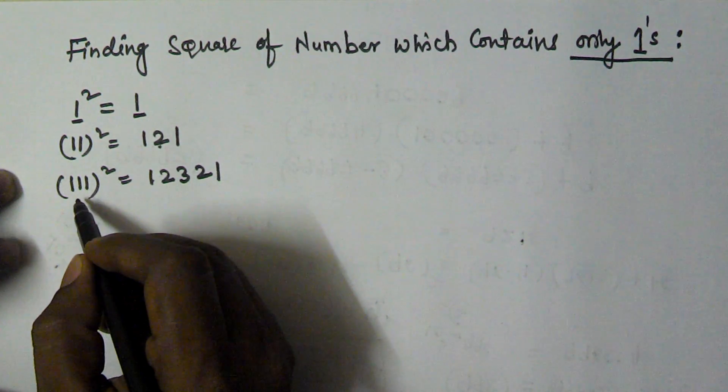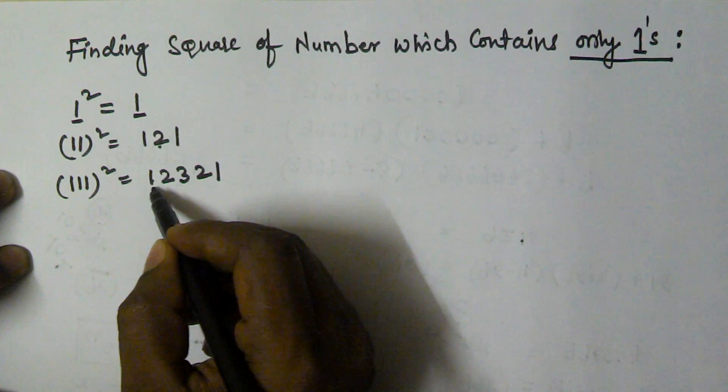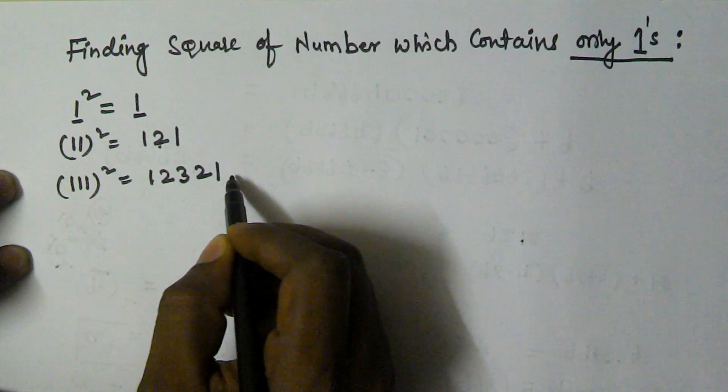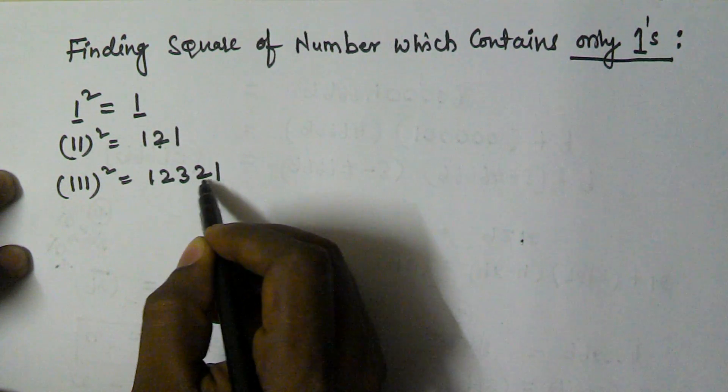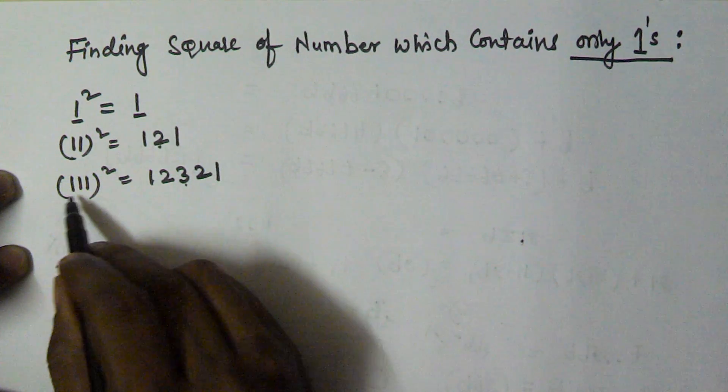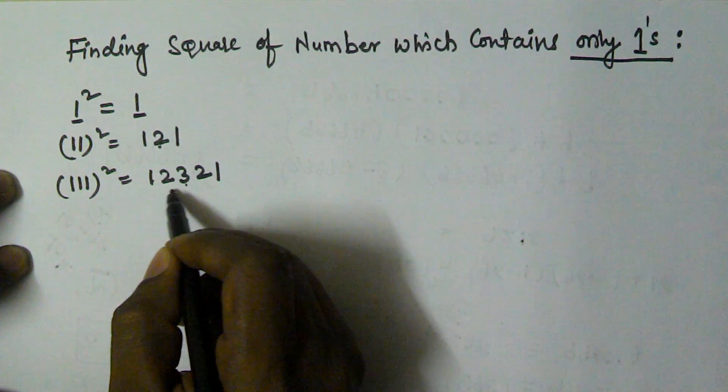It contains 3 digits, so start from 1, 2, 3, increase up to 3 digits and then decrease to 1. So 2 and 1. 111² is 1, 2, 3, 2, 1.